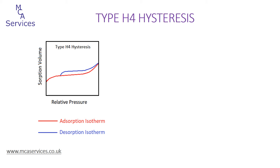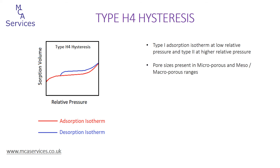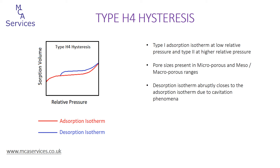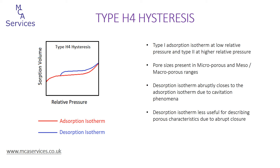Type H4 hysteresis: the isotherms aren't too dissimilar to those of type H3, but now the adsorption isotherm is a hybrid — showing the high adsorption volume at low relative pressures typical of type 1 isotherms, followed by type 2 character at high relative pressures. Therefore, the sample possesses porosity within the microporous range and the mesoporous or small macroporous ranges. Type H4 hysteresis is most commonly associated with microporous and mesoporous zeolites and carbons. Like type H3, it shows the sharp abrupt closure of the desorption isotherm to the adsorption, making the desorption isotherm again less useful for characterising pore sizes.